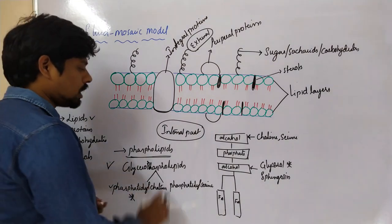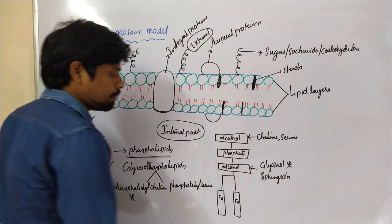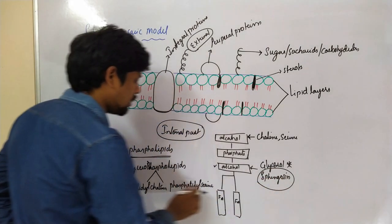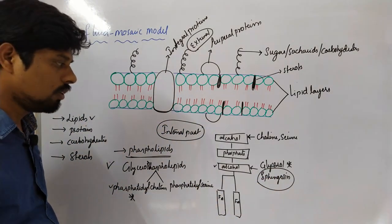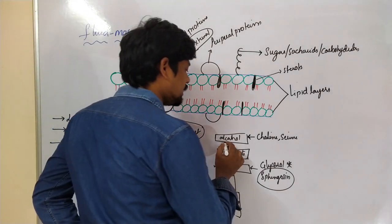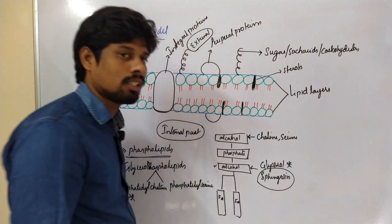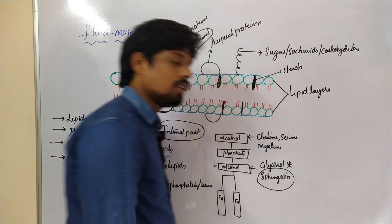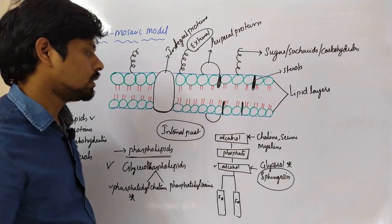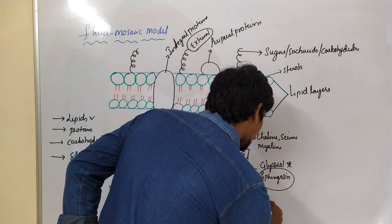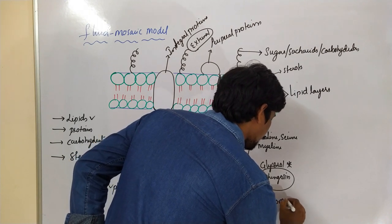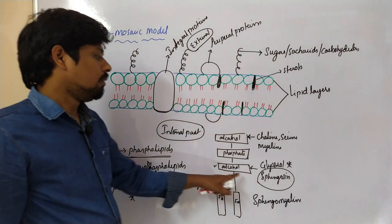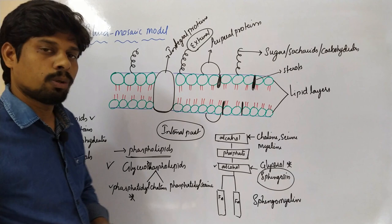After glycerophospholipids, sphingolipids are also present. In sphingolipids, the alcohol position is replaced by sphingosine. These are called sphingophospholipids. In sphingophospholipids, the alcohol place is replaced by myelin, forming a molecule called sphingomyelin. Sphingomyelin is the most abundant among sphingophospholipids.